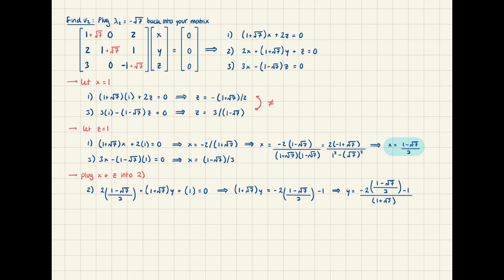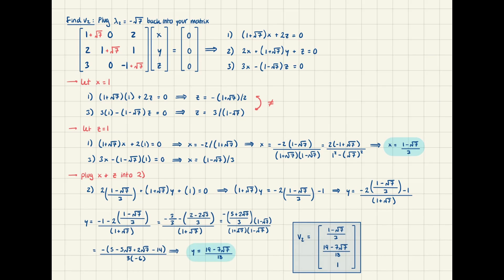During these algebra steps, it's super easy to make mistakes with sign conventions and fractions and stuff, so just take it slow. Okay, sick. We found x, y, and z, and that's our eigenvector for lambda 2.